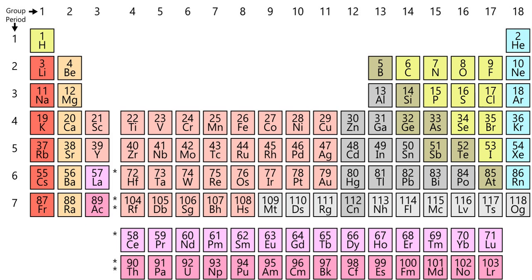Large jumps in the successive molar ionization energies occur when removing an electron from a noble gas configuration. For magnesium, the first two molar ionization energies correspond to removing the two 3s electrons, and the third ionization energy is a much larger 7730 kJ per mole, for the removal of a 2p electron from the very stable neon-like configuration of Mg²⁺. Similar jumps occur in the ionization energies of other third-row atoms.